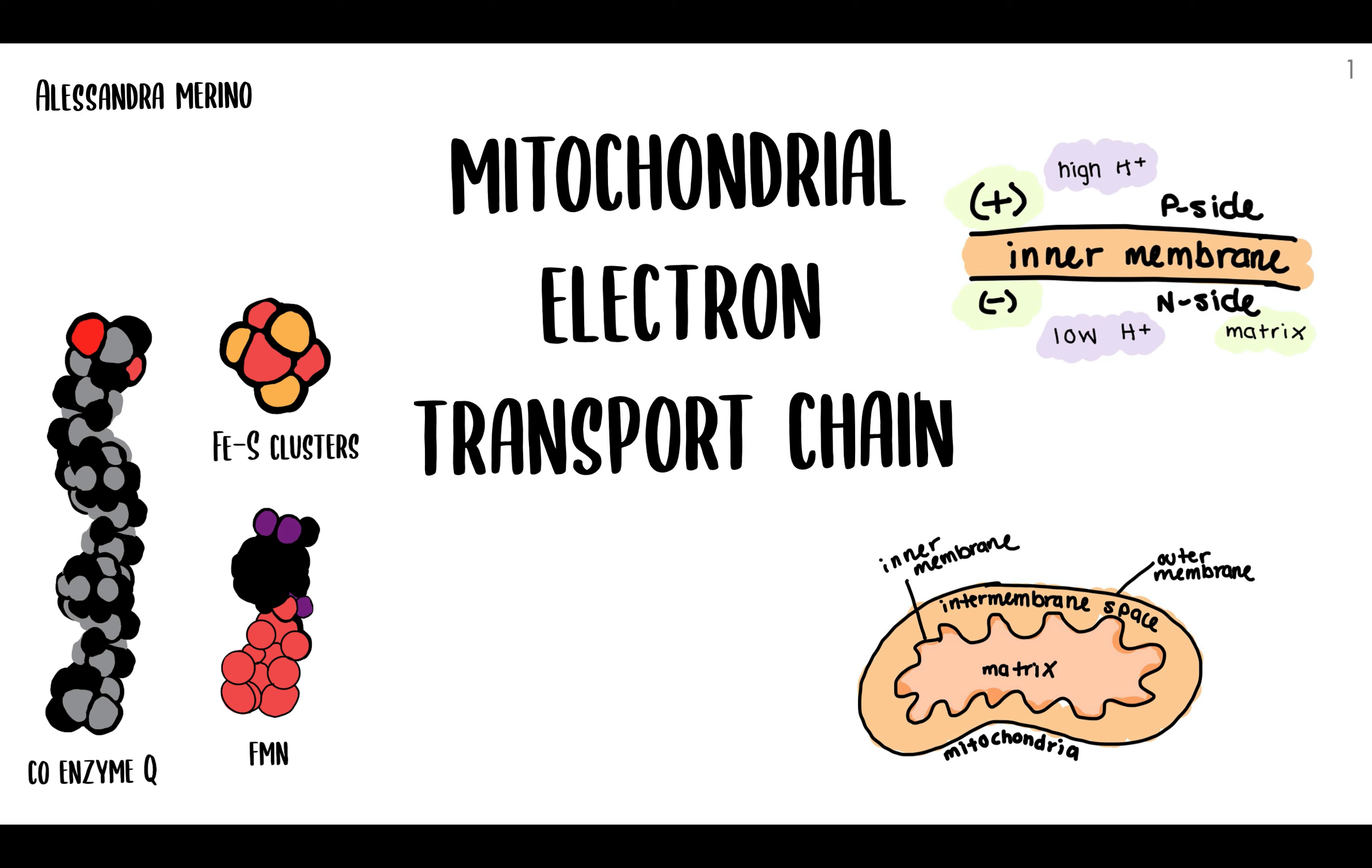Then we have the iron-sulfur clusters, which are prosthetic groups, meaning that they are very tightly bound to their corresponding protein. All iron-sulfur proteins are able to transfer one electron at a time. The iron atom of the cluster can either be oxidized or reduced. These can all be found in Complex 1, Complex 2, and Complex 3 of the ETC. We also have the flavin mononucleotide, or detailed as FMN. It is a prosthetic group as well, which is found in Complex 1. It is a universal electron acceptor, which in its oxidized form can either accept one or two electrons. This is extremely important and essential in the chain.